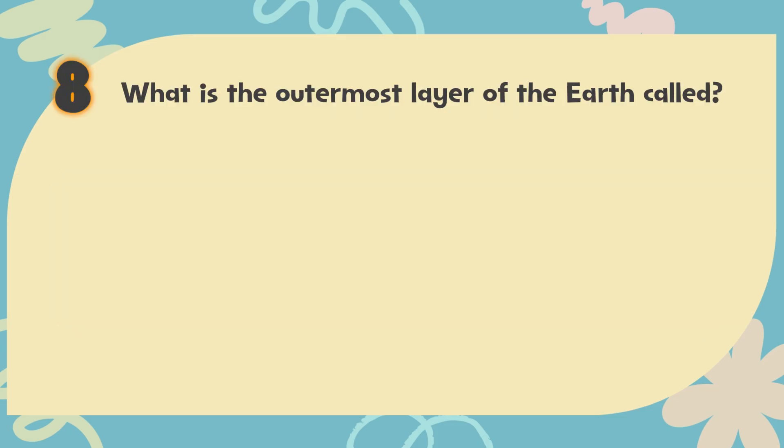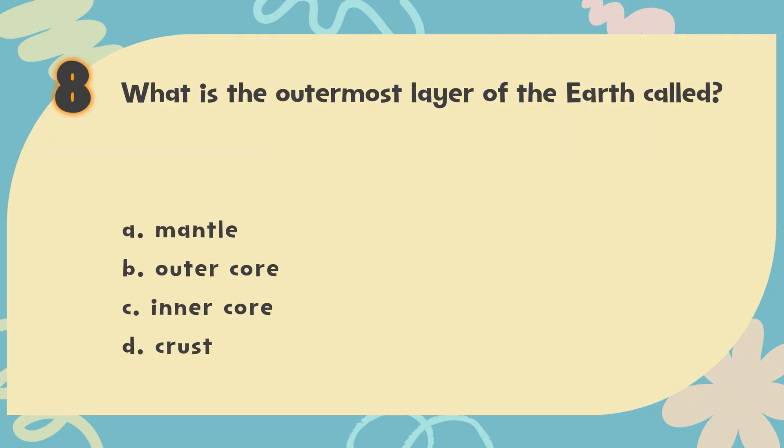Number 8. What is the outermost layer of the earth called? The choices are: A. Mantle. B. Outer core. C. Inner core. D. Crust.